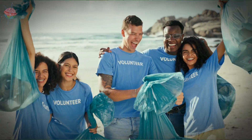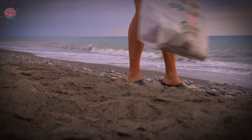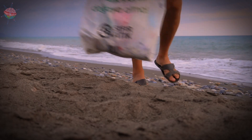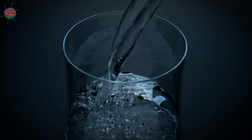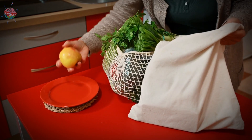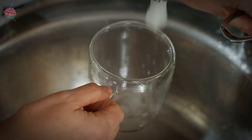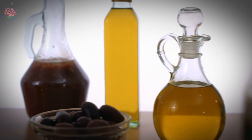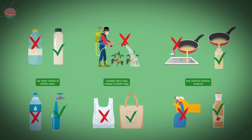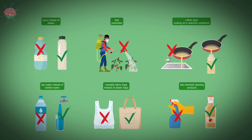There are a whole lot of things you can do to protect the Earth's natural water bodies. First of all, use fewer plastic products. Instead of plastic containers, use glass ones. And instead of plastic bags, use reusable cloth bags. Drink tap water instead of bottled water. Collect used cooking oil in selective containers. And last but not least, use fewer chemicals in your garden and household.